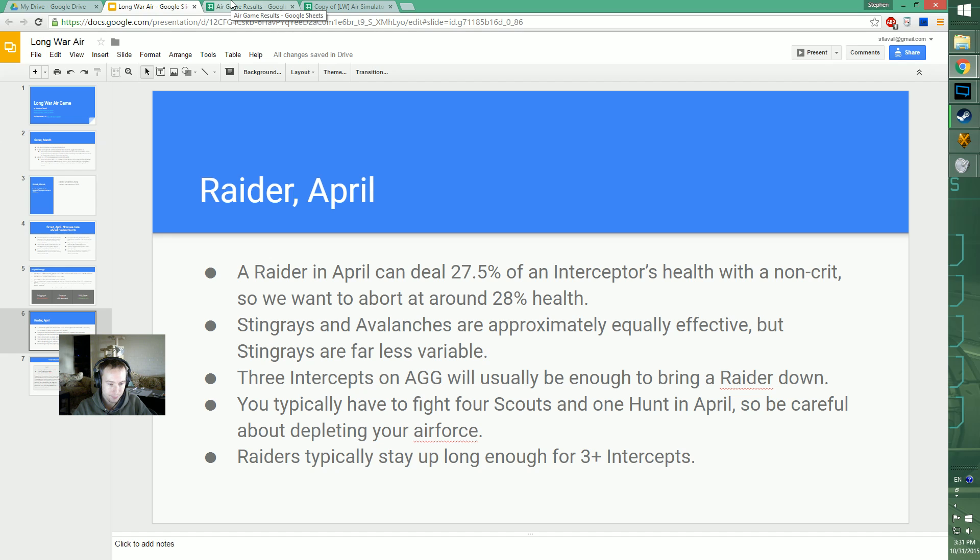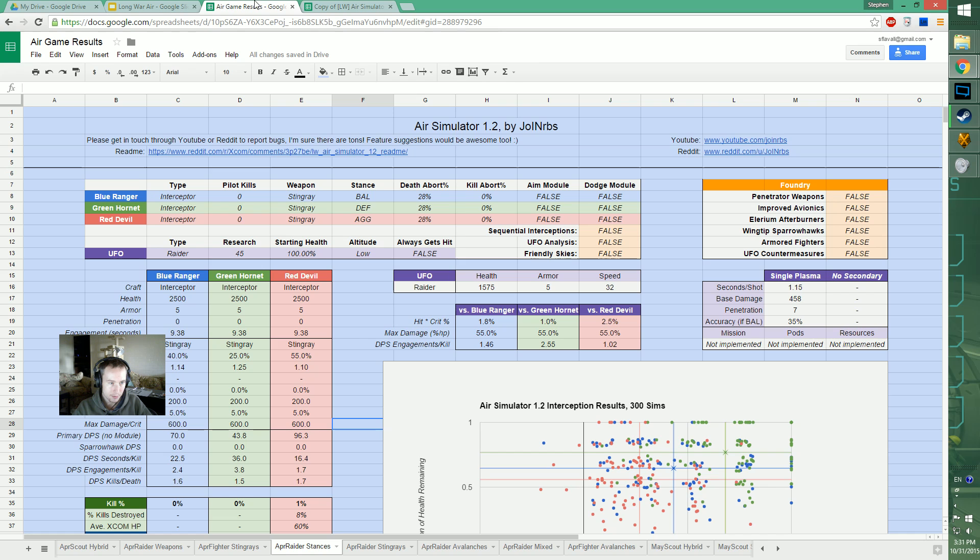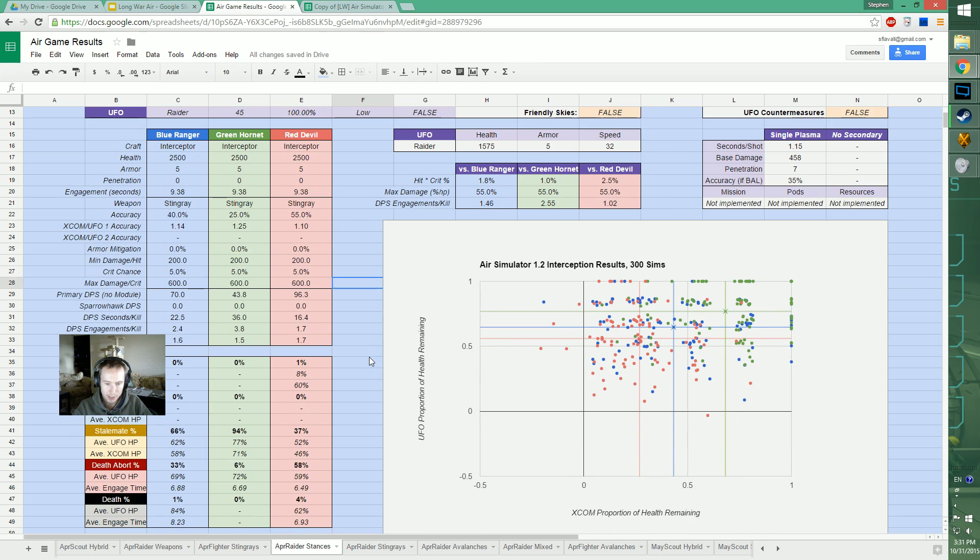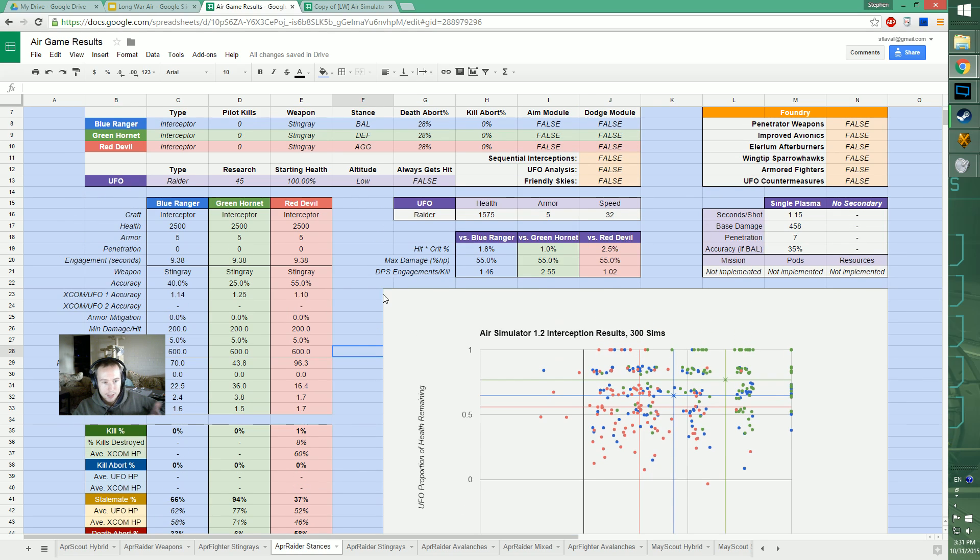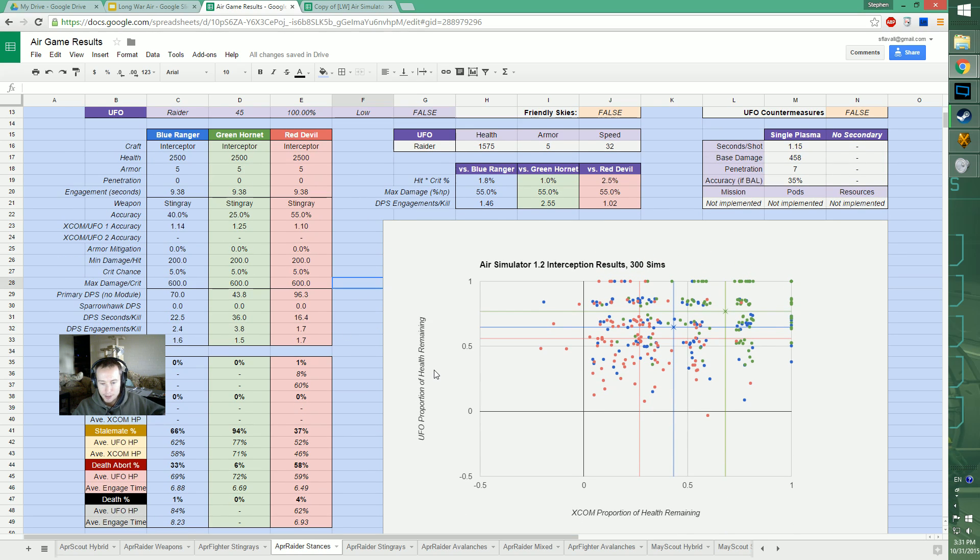I said aggressive, so first I want to show you stances. This happens to be using Stingrays, but Stingrays and Avalanches are roughly comparable. You can see defensive stance on average we just don't deal enough of the UFO's health per intercept - less than a quarter. We don't take a whole lot of damage though.